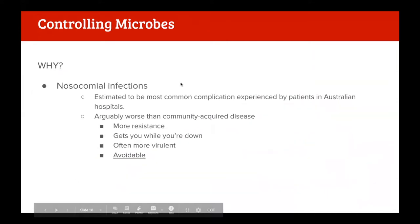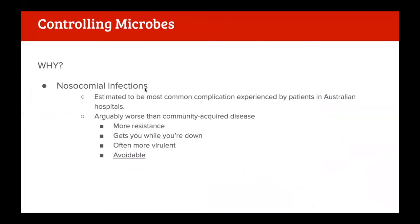Now let's get on to why we need to control microbes. In a hospital setting it's because we're very worried about nosocomial infections - hospital-acquired infections. The reason we worry is: they're quite serious, they happen a lot and are considered the most common complication experienced by patients in Australian hospitals, and with proper practice, many nosocomial infections are really avoidable through simple hygienic practices.